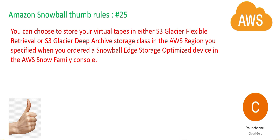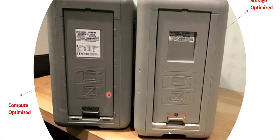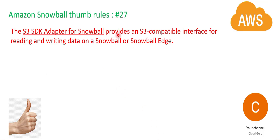For edge storage optimized devices where you are only worried about storage, not compute — to manage the Snowball in a small edge, use the Snowball Job Management API. Using this API you can do job creation and management and access those management features. To read and write data in the Snowball, you can use the S3 SDK adapter — this is what thumb rule 27 states. This question comes in the AWS Solutions Architect Associate exam where they give different options, and the SDK adapter is the best option.